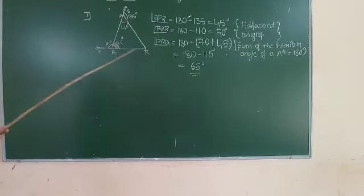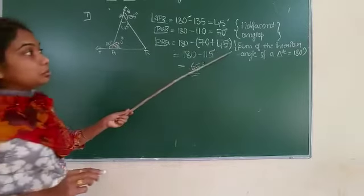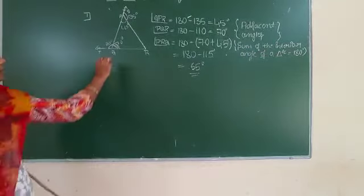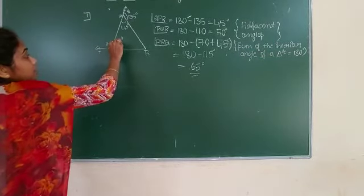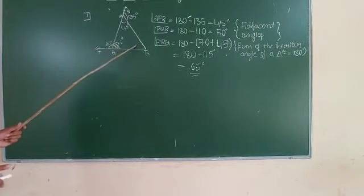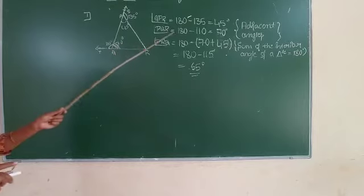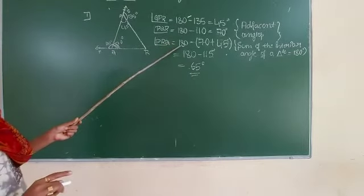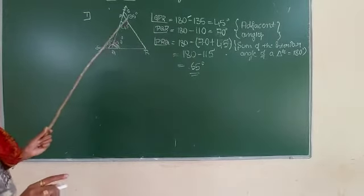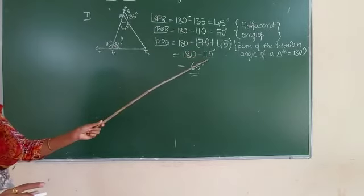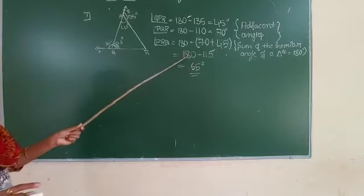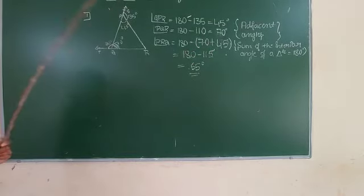Now we have to find angle PRQ. Using the property that the sum of interior angles of a triangle is 180 degrees: we found angle Q is 70 degrees and angle P is 45 degrees. Adding 70 and 45 gives 115 degrees. Subtracting 115 from 180 degrees, we get angle PRQ equal to 65 degrees.